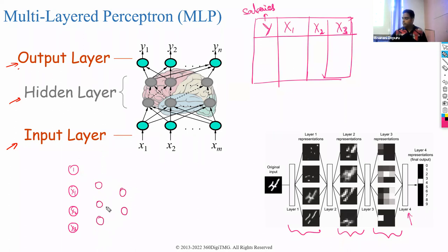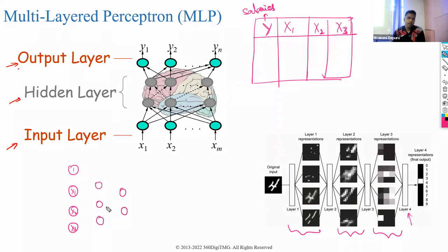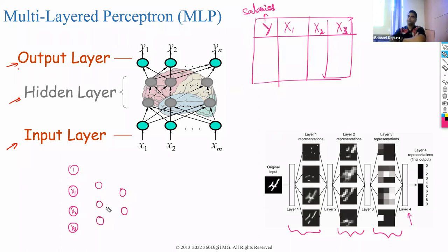If you keep adding more and more hidden neurons and hidden layers, your model accuracy will increase, but your model might also overfit. Additionally, it will be very time-consuming if you keep adding more and more hidden layers and neurons.